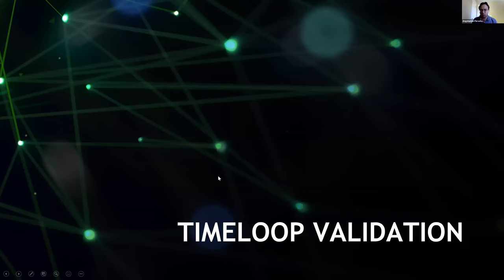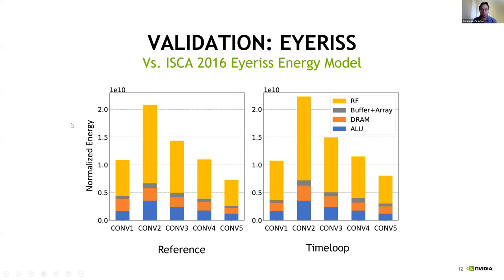Let's walk through validation experiments for Timeloop. The first validates against IRIS, specifically the IRIS energy model from the ISCA 2016 publication. The left-hand side shows reference data from that publication; the right-hand side shows experiments reproduced using Timeloop. The x-axis shows a set of workloads, the y-axis shows normalized energy with a component breakdown as an energy stack. We're within 5–10% error for almost each workload.